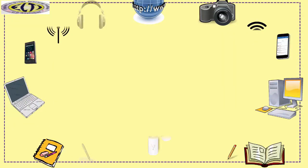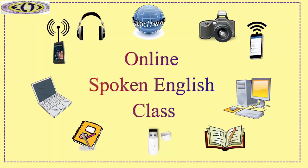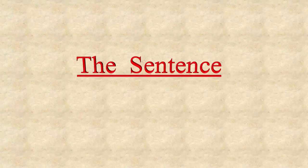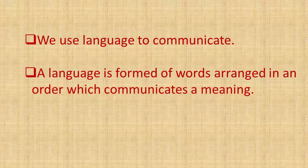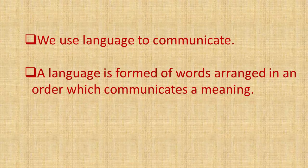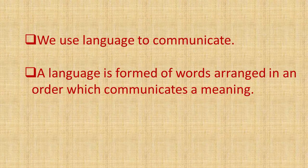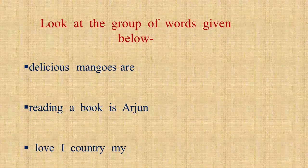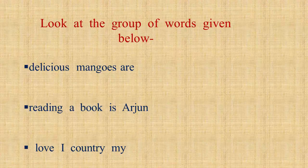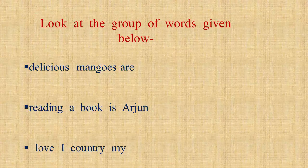Hello friends and welcome back to online spoken English class. In this module, we shall learn about the sentence. We use language to communicate. A language is formed of words arranged in an order which communicates a meaning. Isolated words do have meaning, but to communicate we have to use them in a specific order. This is what we do in a sentence.